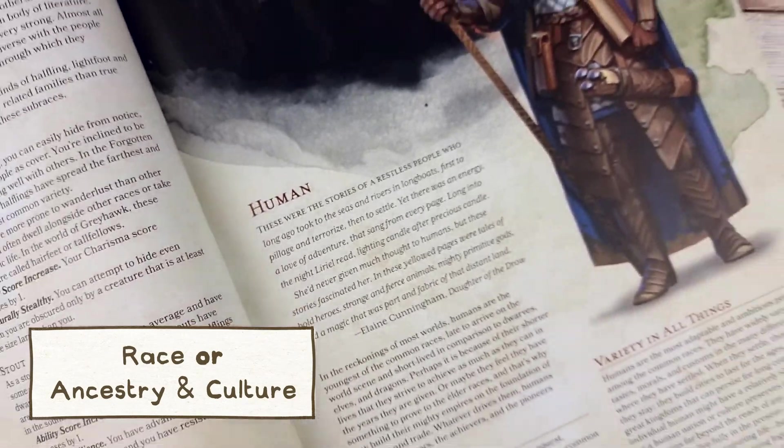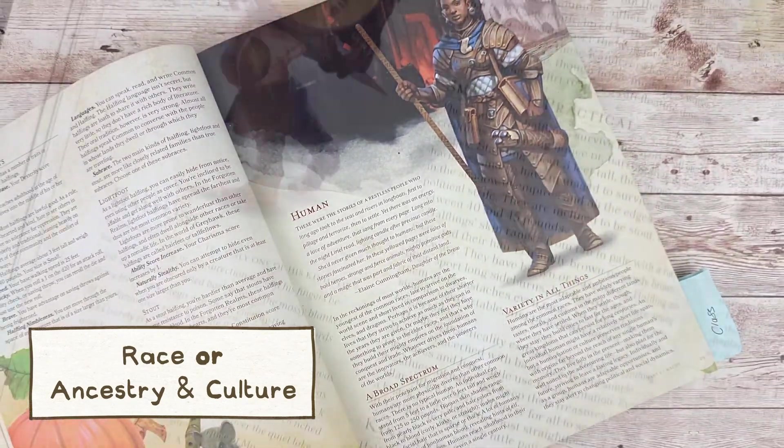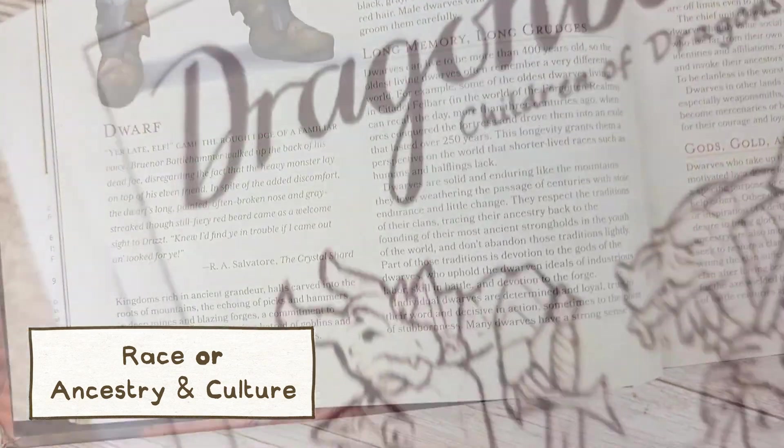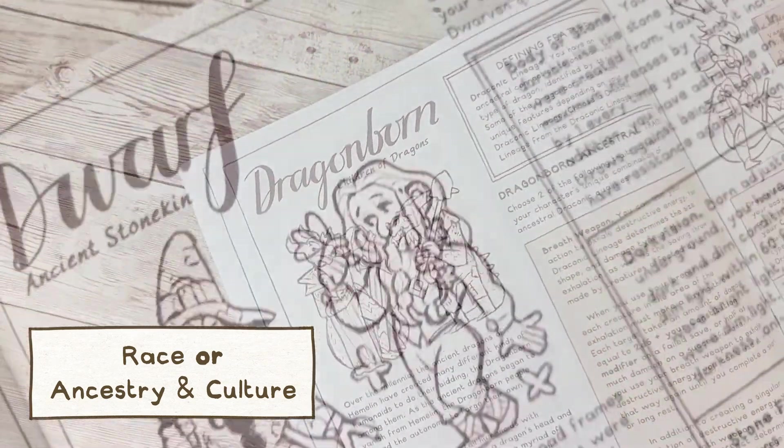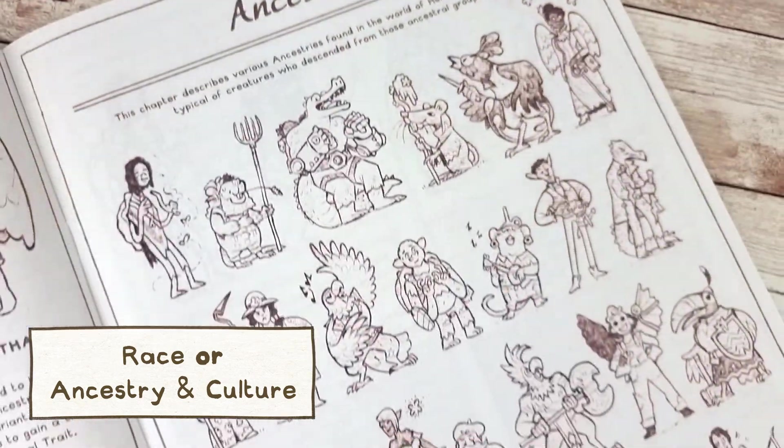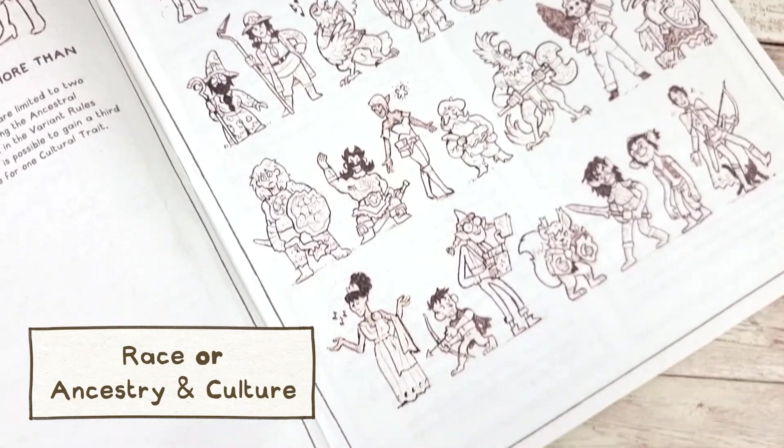Your character's race represents the traits they've inherited from their parents and that they share with their kin. There are various race options to choose from in the handbook but as I mentioned before I prefer to use the ancestry and culture system which removes the more problematic elements and gives more diverse and interesting options for character creation.